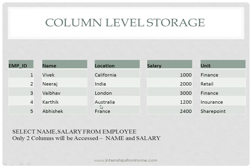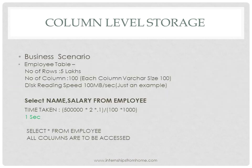If we run the same query SELECT name, salary FROM employee, this is the ideal environment for it. Since we only need to access two columns, column level storage will access only those two files. For the same business scenario — 5 lakh rows, 100 columns, 100-byte varchar size, and the same disk reading speed — instead of accessing 100 columns we now access only 2. That means performance has increased by 50 times.